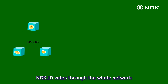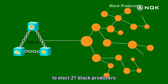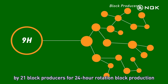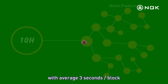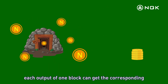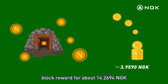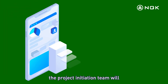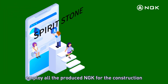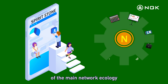NGK.io votes through the whole network to elect 21 block producers. These 21 block producers rotate block production every 24 hours, with an average of 3 seconds per block. Each output of one block receives a corresponding block reward of approximately 14.2694 NGK. The Project Initiation Team will employ all produced NGK for the construction of the main network ecology.